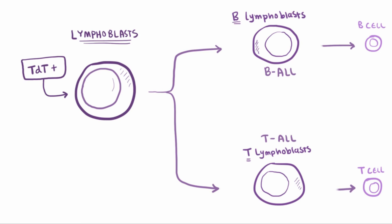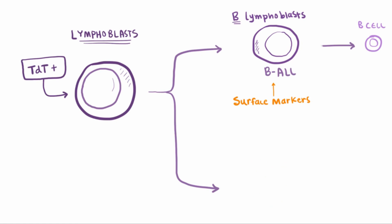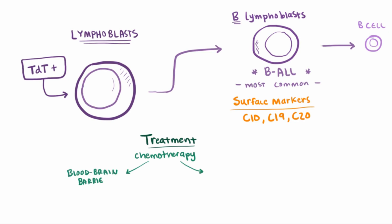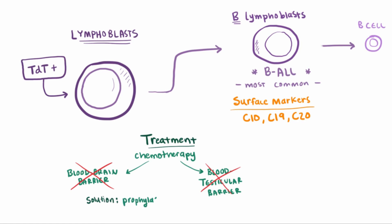Just like we identified lymphoblasts with TdT positivity, we can also determine which subtype it is based on surface markers. The most commonly seen are B lymphoblasts, so B-ALL. Super important and specific surface markers to look for are CD10, CD19, and CD20. Treatment of B-ALL usually involves chemotherapy, and there's usually a very good response. But one thing to remember is that chemotherapy goes into the blood and can't cross the blood-brain barrier or the blood-testicular barrier, so patients often need prophylactic injection of chemotherapy to the scrotum and the cerebrospinal fluid.